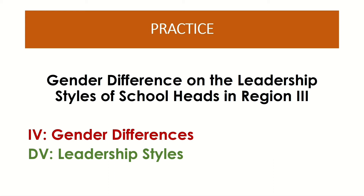I would like to note that in this particular example, instead of using an intervention or treatment to see if it has any effect on the leadership styles of the school heads, the researcher used an innate independent variable of the respondents — and that is gender, whether they are L, G, B, T, or Q. So there is no treatment, but there is an innate independent variable used by the researcher.